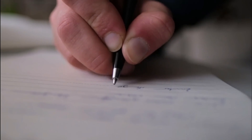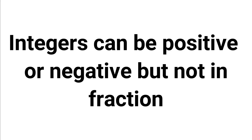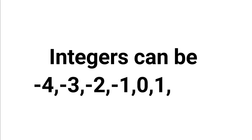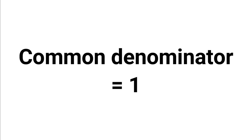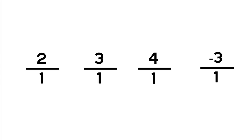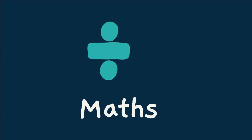It's important to note that all integers — i.e. non-fractional whole numbers that can be positive, negative or zero — can be rewritten as fractions with a common denominator of one. Examples include 2 over 1, 3 over 1, 4 over 1 or minus 3 over 1. This is useful to know for division problems.